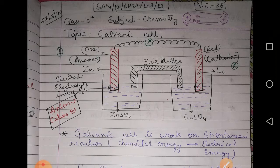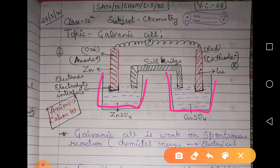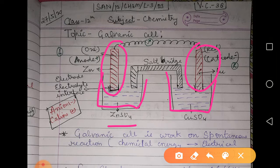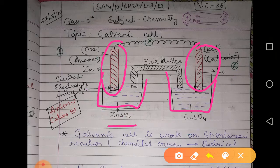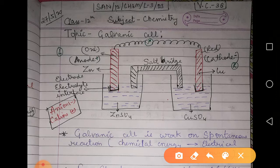Here you can see I have taken two beakers — one of ZnSO₄ and one of CuSO₄. In each solution I have taken two electrodes, one of zinc and one of copper. It is compulsory that when we place any electrode in a solution, we take the electrode of the same metal — ZnSO₄ gets a Zn electrode, and CuSO₄ gets a Cu electrode.